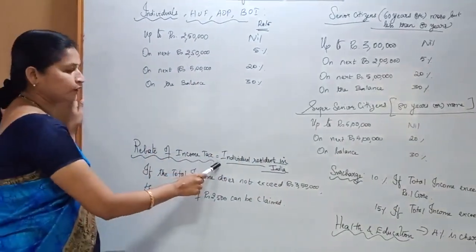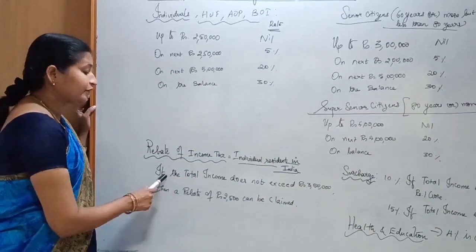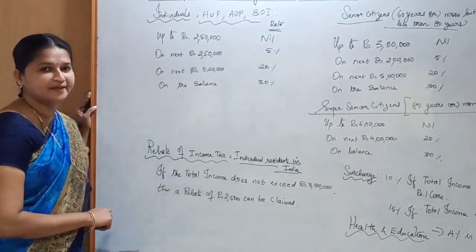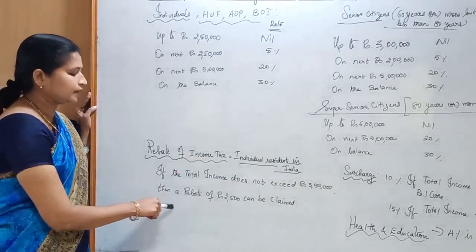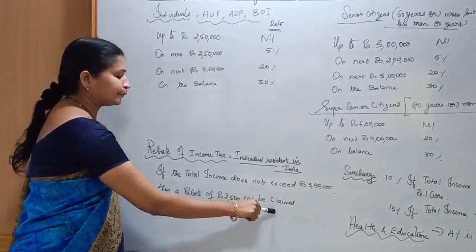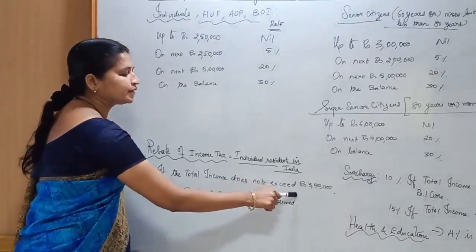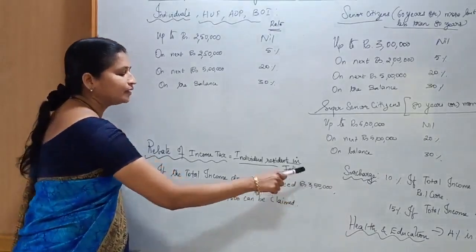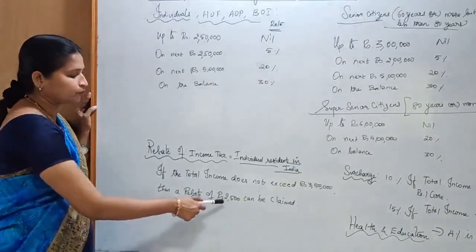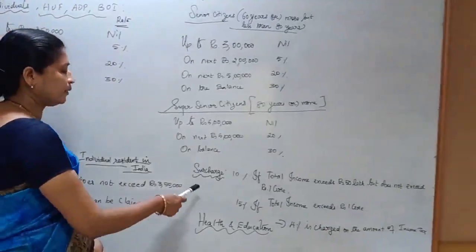Regarding the rebate of income tax under Section 87A: in the case of individual residents in India, if the total income does not exceed Rs. 3,50,000, then a rebate of Rs. 2,500 can be claimed. The condition is that his total income should not exceed Rs. 3,50,000; then this deduction of Rs. 2,500 can be claimed.